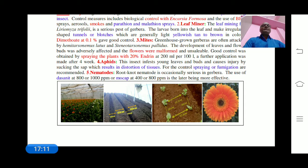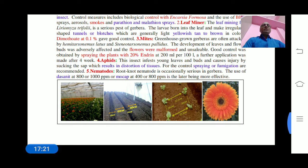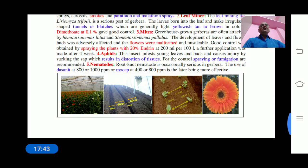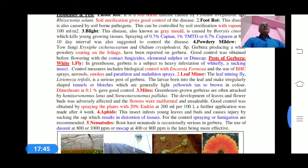Nematodes, specifically root-knot nematodes, are occasionally serious in polyhouse gerbera cultivation. The use of Dasanit at 800 or 1000 ppm or Mocap is the most important chemical for controlling nematodes. This is about the cultivation of the gerbera plant.